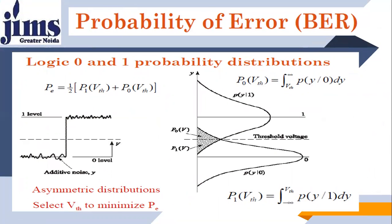Look at the probability distribution of 0 and 1. In this picture, there is a threshold line below which we have a 0 level and above which we have a 1 level. If anything is found below this dotted threshold line, the receiver declares a 0; if anything is above it, the receiver declares a 1 bit. Both probability distributions follow Gaussian distribution, since noise is considered a random variable whose distribution follows Gaussian.